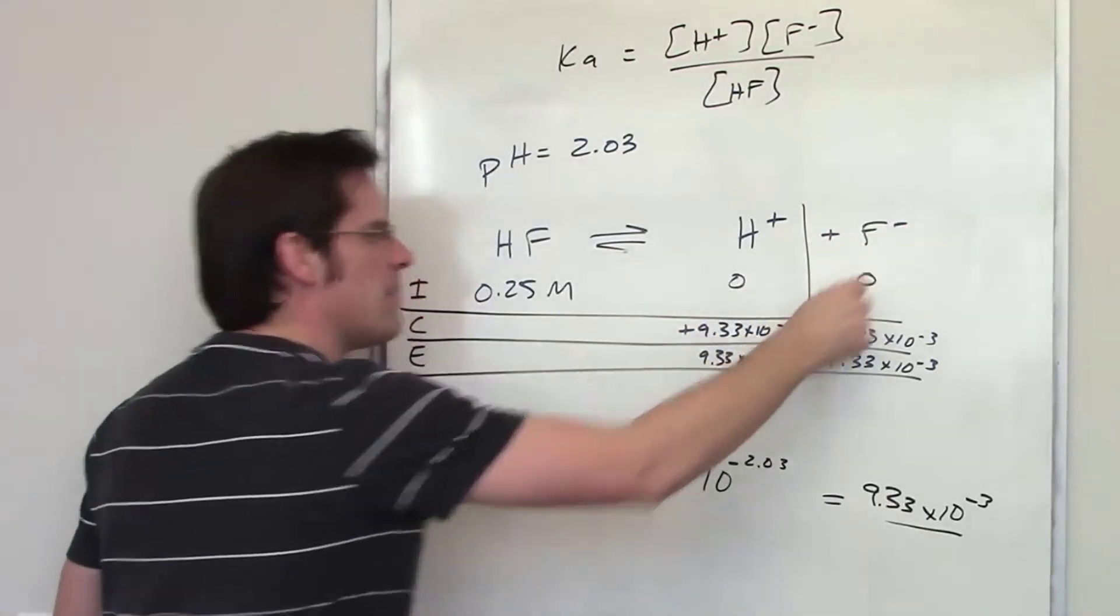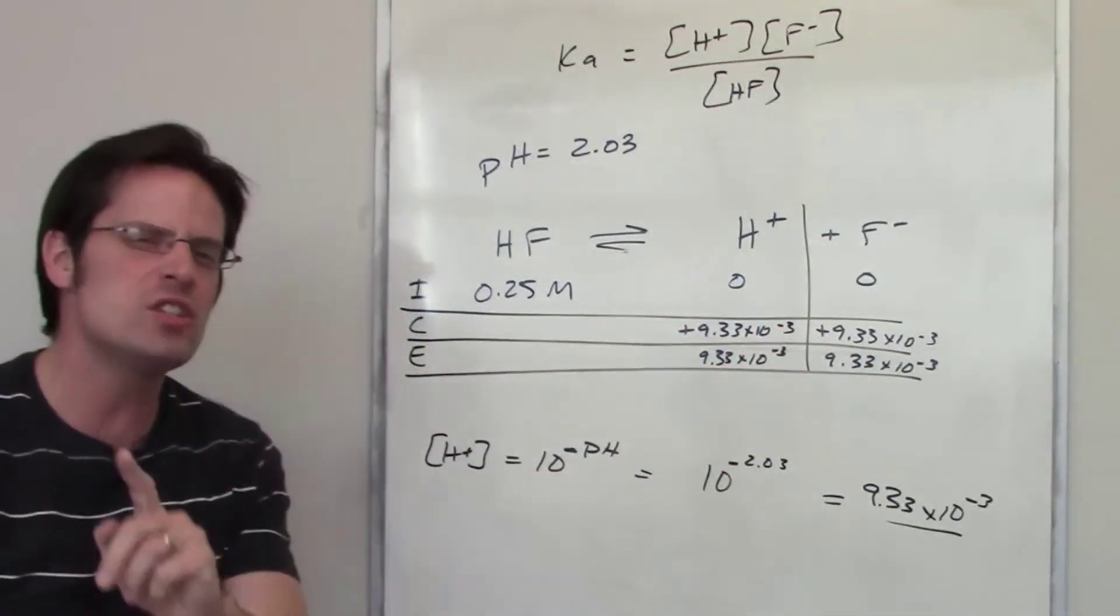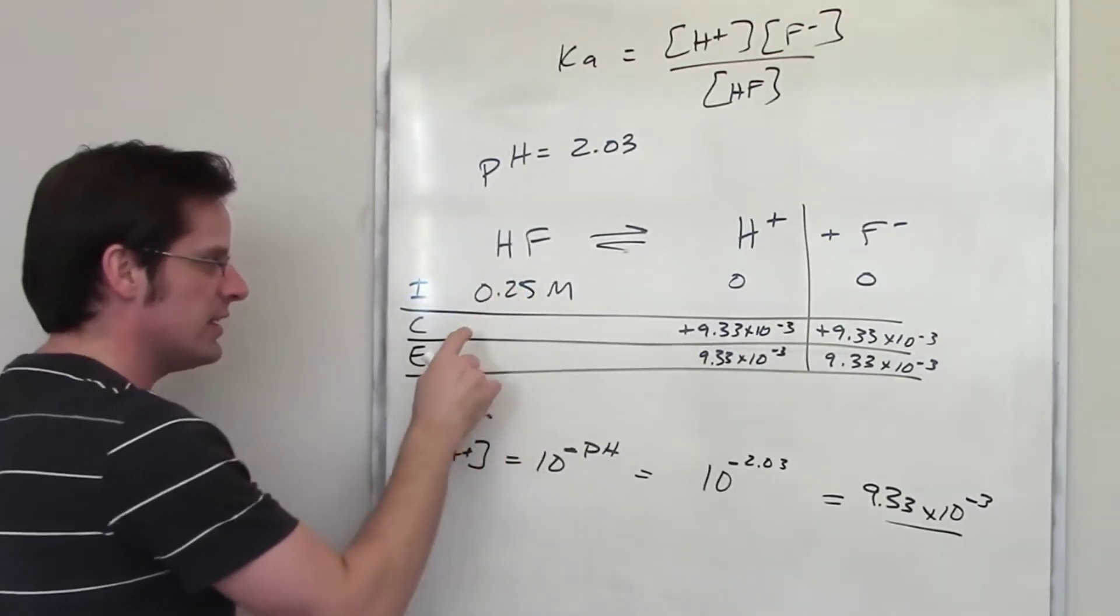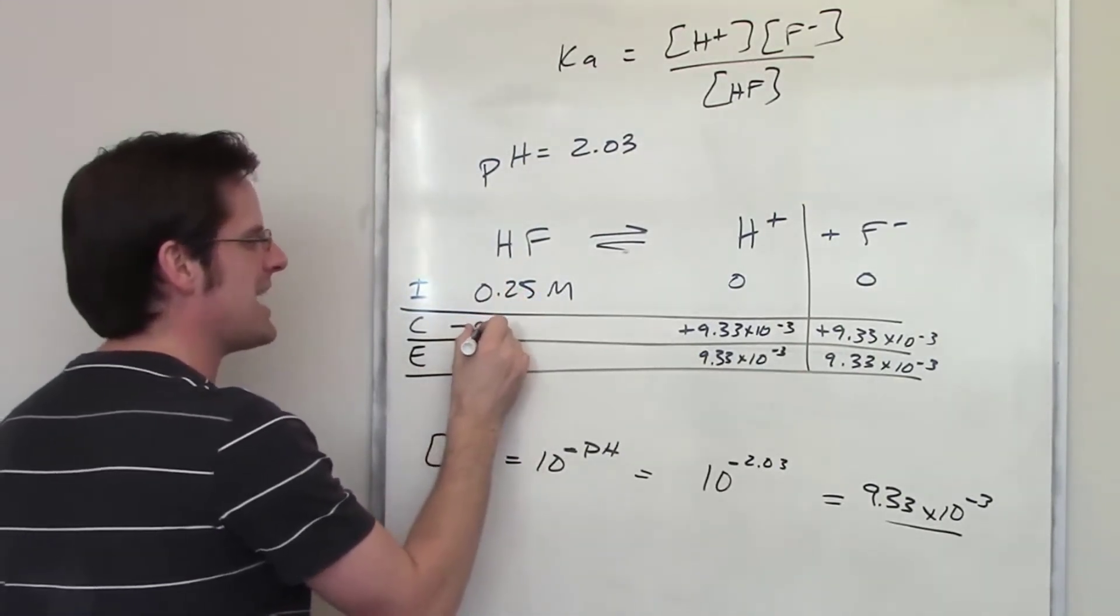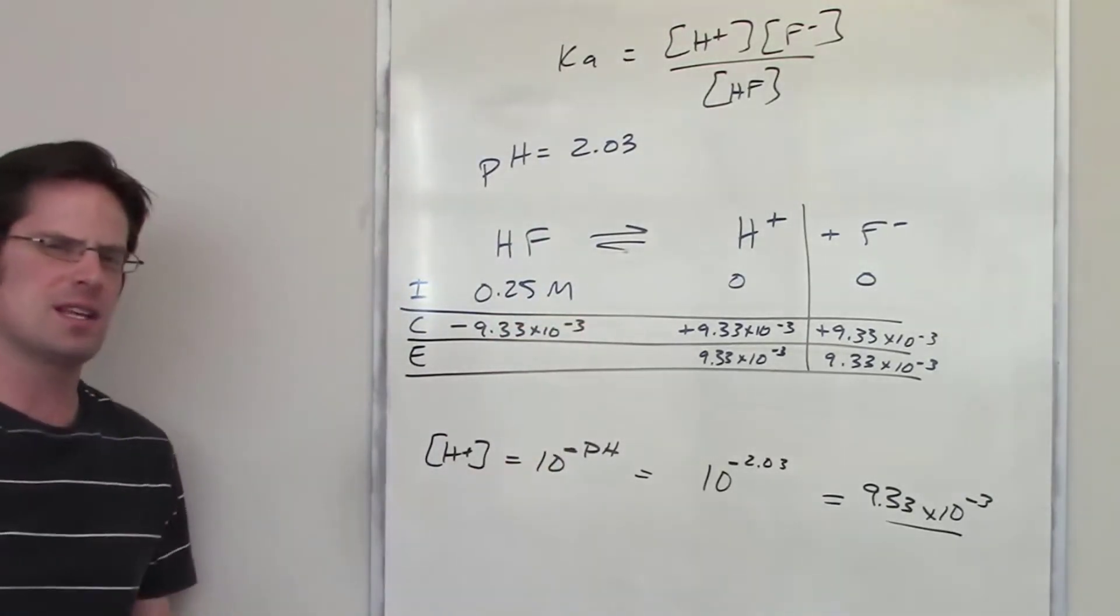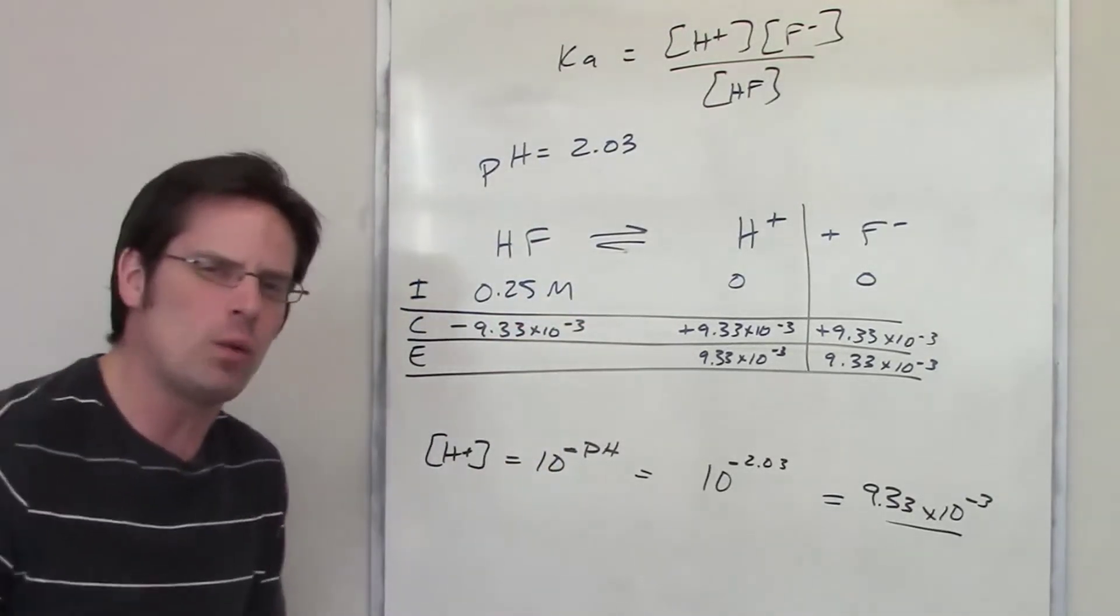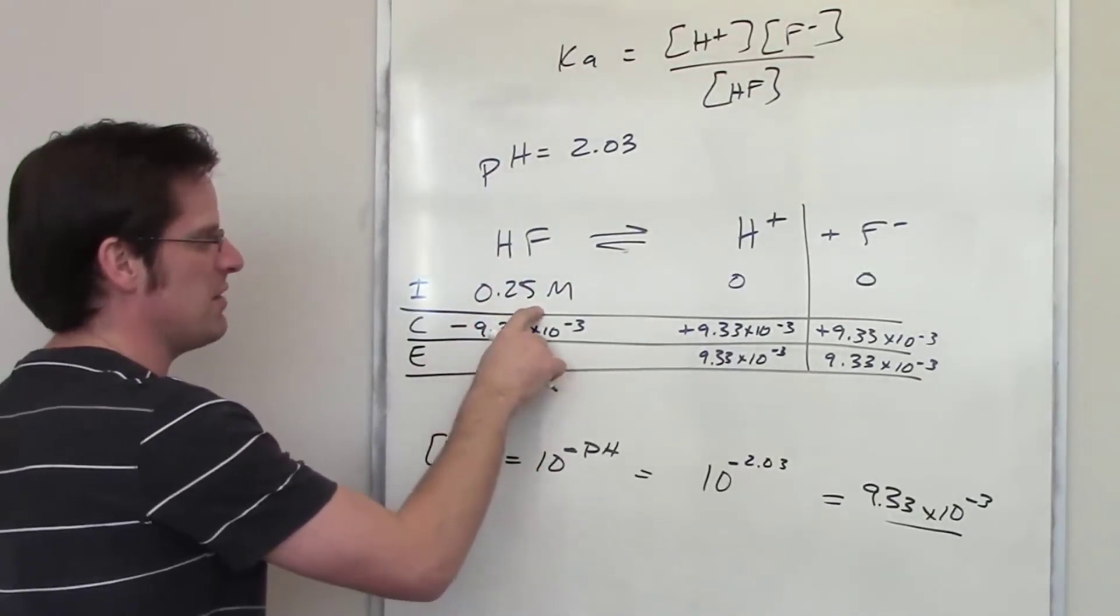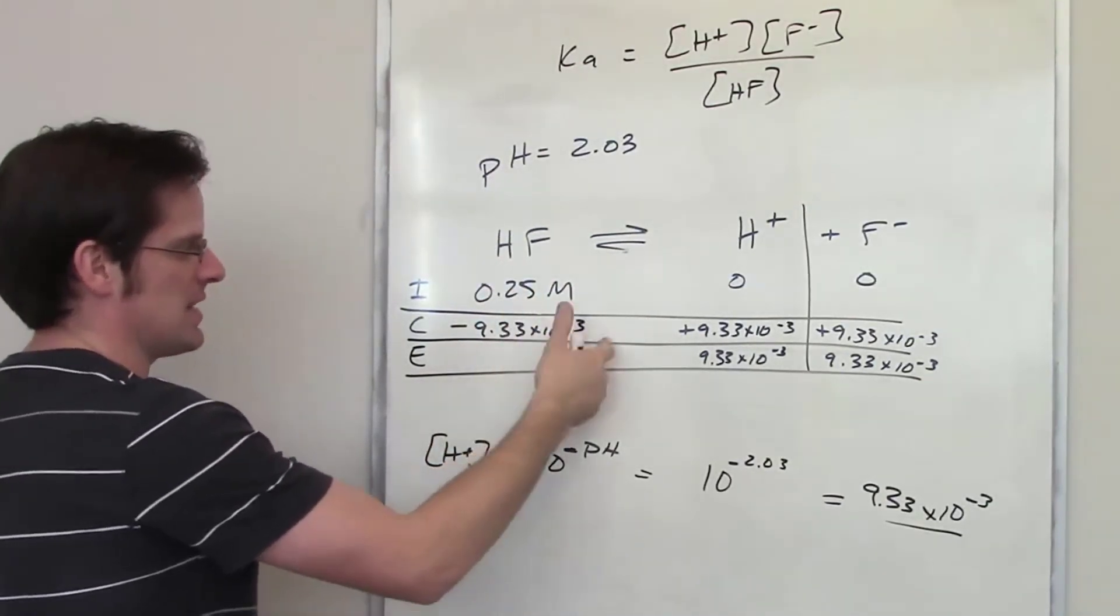Now, HF to H plus to F minus, stoichiometric ratios, 1 to 1 to 1. Which means that the change in concentration of HF, right here, had to be minus 9.33 times 10 to the negative third. Does that make sense? So, what does the equilibrium concentration of HF end up being? I just take 0.25 and subtract 9.33 times 10 to the negative third from it.